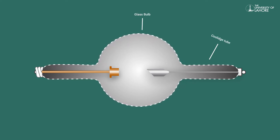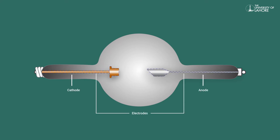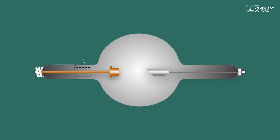The Coolidge tube is made up of a glass bulb. It has two electrodes: a filament cathode and a target material anode. E1 and E2 are two electromagnetic field plates that control the acceleration of cathode rays.